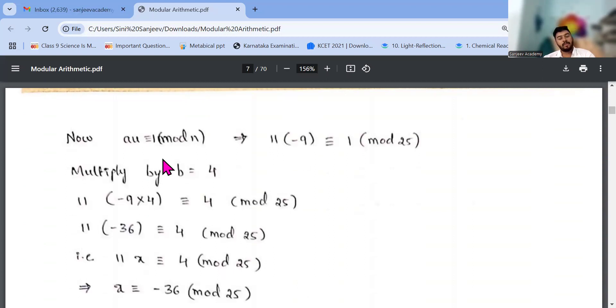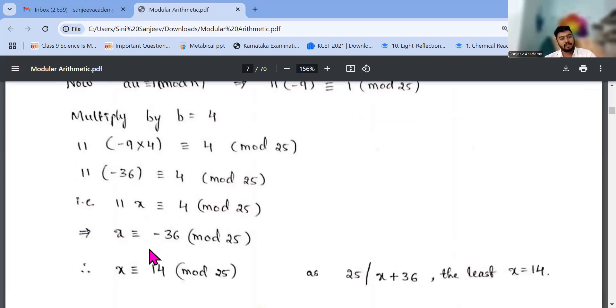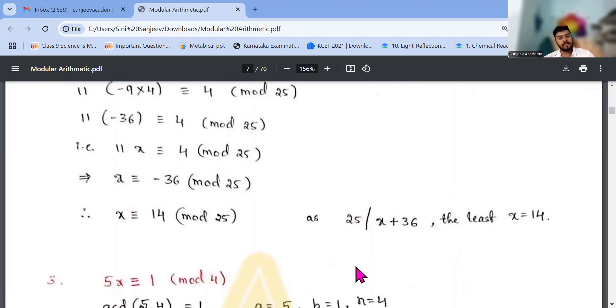Next, au congruent to 1 mod n. 11 times minus 9 congruent to 1 mod 25. Multiply b equals 4. 11 times minus 9 times 4 equals 4 mod 25. So minus 36. So 11x equals 4, x equals minus 36 mod 25. So x equals 14 I will be getting. It is 25x plus 36 where at least x should be equal to 14. Then only I will be able to get the answer. So it is as simple as that.